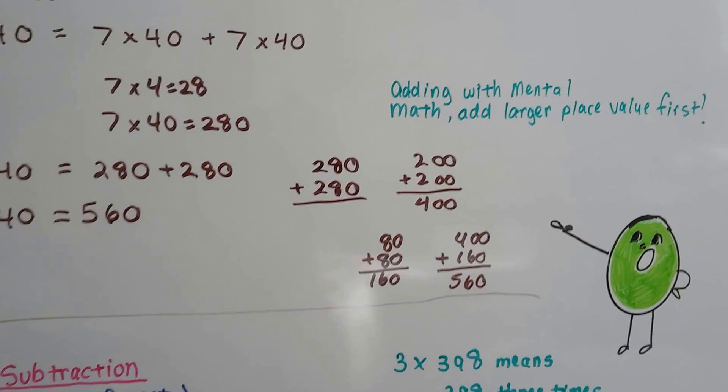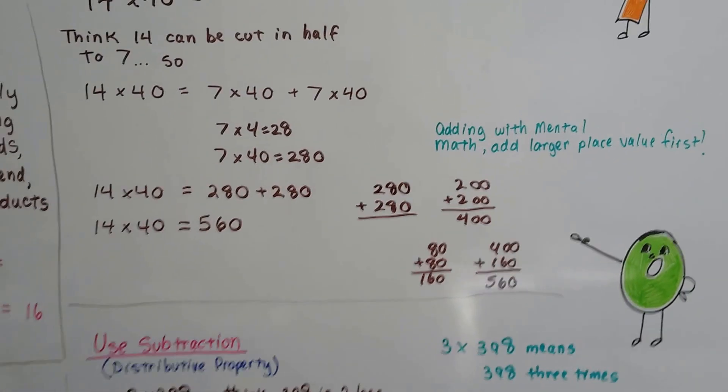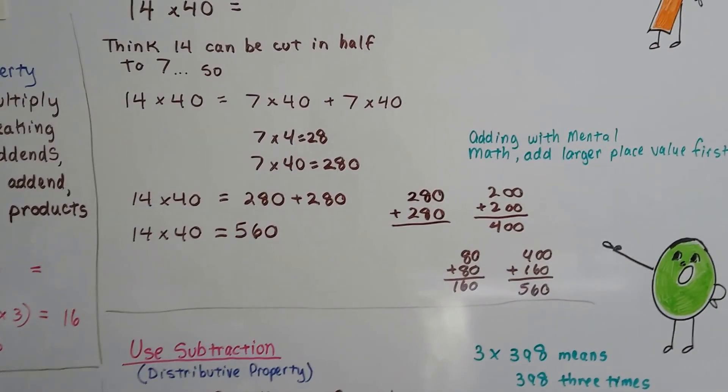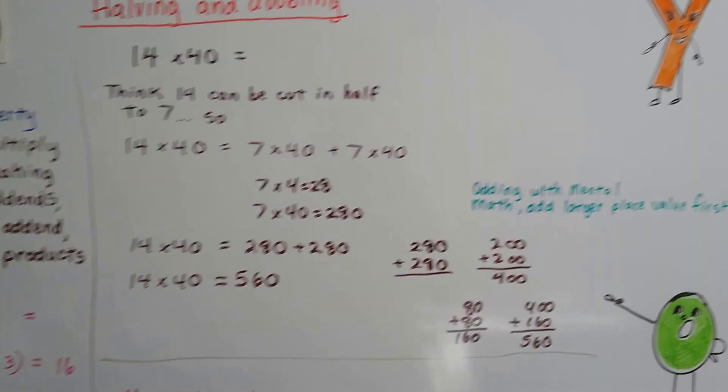That's mental math for larger place values. So we know that 14 times 40 is 560. That's halving and doubling.